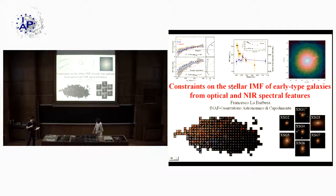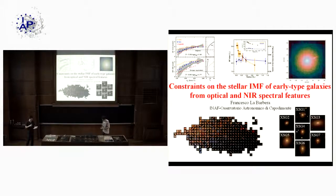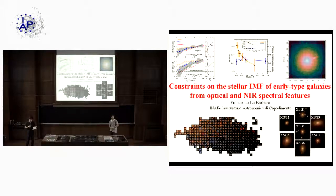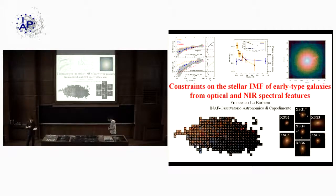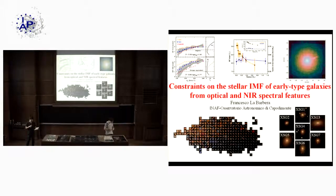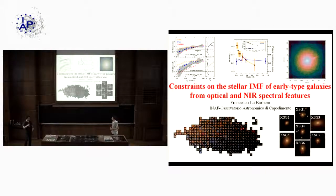He was a postdoc at INAF for a few years, and right after that he got a position at the Observatory of Naples since 2004. Francesco works on stellar populations and structural properties of early-type galaxies, scaling relations, the effect of environment on galaxy evolution. He is also a member of the KIDS and STEP surveys, and he is a great expert on the study of the stellar IMF in unresolved stellar populations, which is what he is going to talk about today.